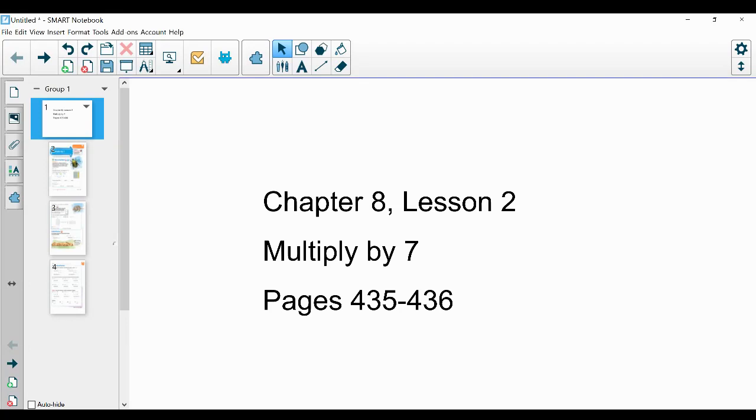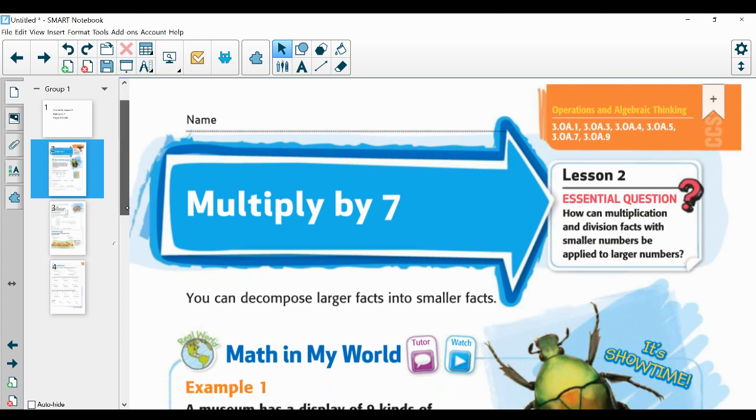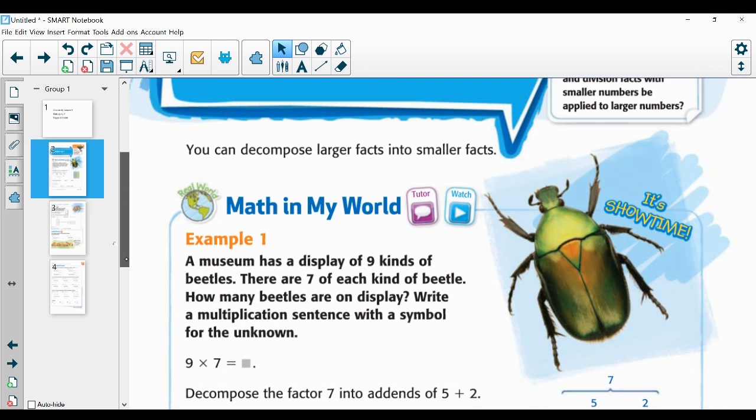Okay, today we're doing Chapter 8, Lesson 2, Multiply by 7, pages 435 through 436 in your math book. So we are multiplying by 7. You can decompose larger facts into smaller facts. They don't have to be even numbers. So let's look at our word problem.